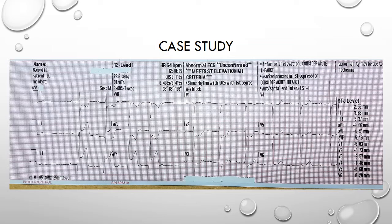In a study on identifying the culprit artery in inferior wall STEMI from the Canadian Journal of Cardiology, it was found that the best criteria to identify the RCA as the culprit was ST elevation in lead 3 greater than in lead 2, and ST depression in lead 1 — and we clearly have that in this ECG. But what else is there?